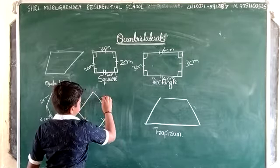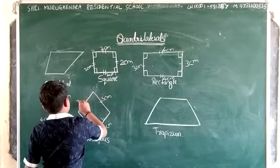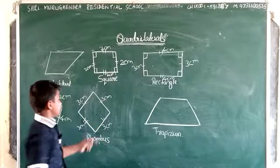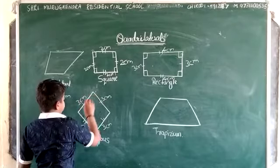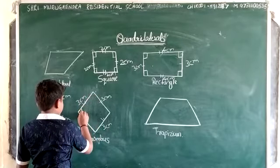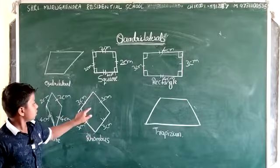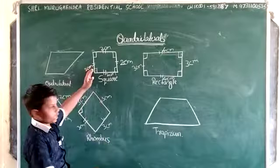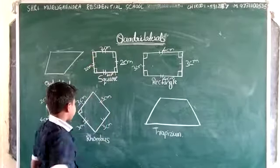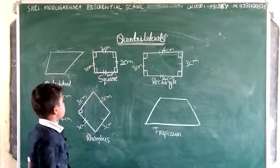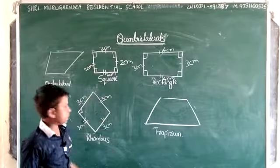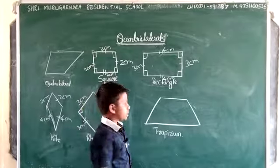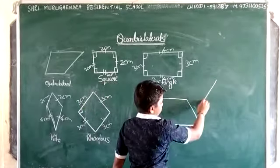And now kite. Kite means these two upper sides will be equal and these two will be equal. Now this is four centimeters and this will be also four centimeters. If it is two centimeters, it will be also two centimeters. Here these two are equal and these two are equal. This type of figure is known as kite.